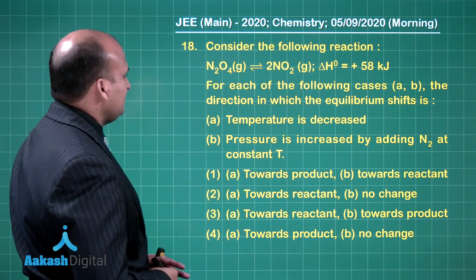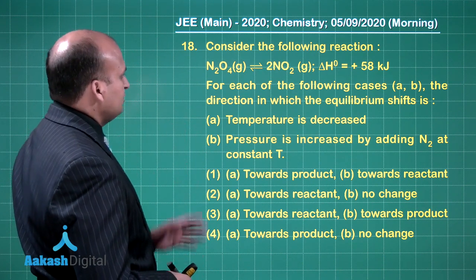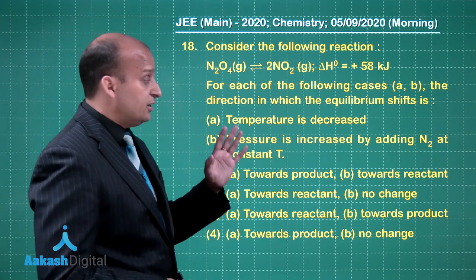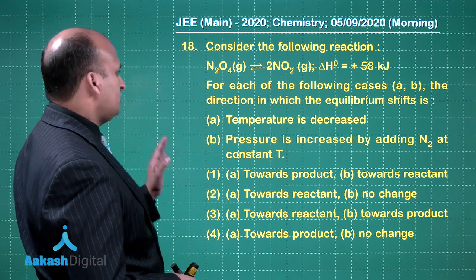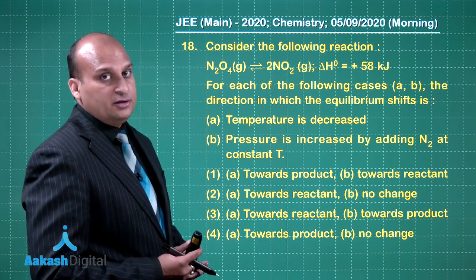Let us move on to the next question. Question number 18. Now what does it say? Consider the following reaction. N2O4 is dissociating to give 2NO2, delta H naught is plus 58. So it is an endothermic reaction. For each of the following cases A and B, the direction in which the equilibrium shifts is. So basically we are talking about Le Chatelier's principle.